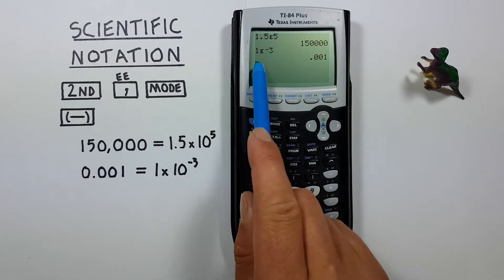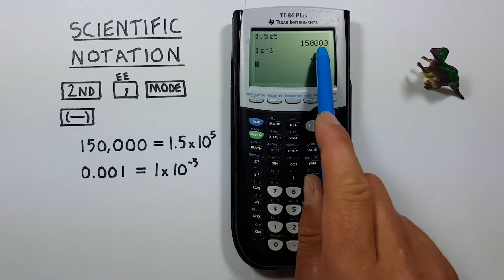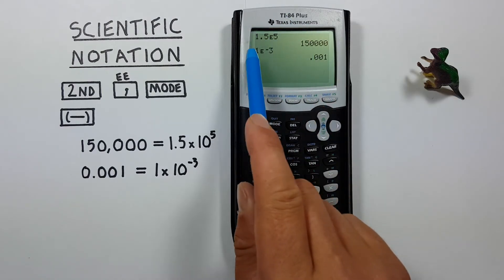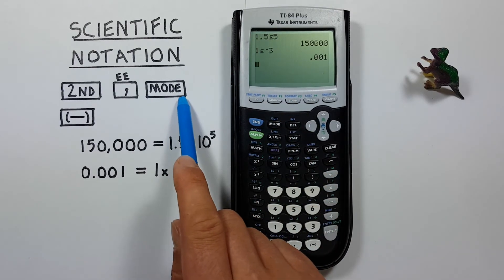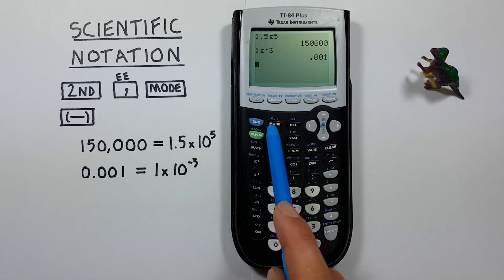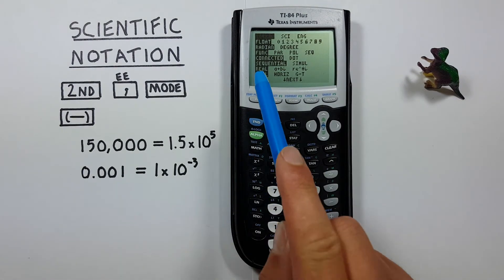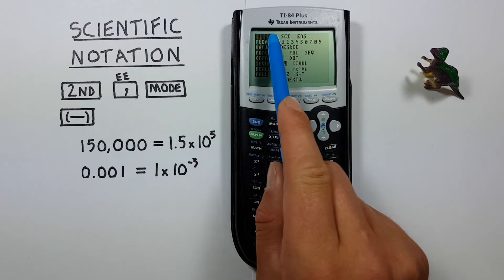Now this is good for entering numbers on an individual basis. But if we are given a number like say this in normal notation and want to convert that into scientific notation, well to do that we need to change our calculator to scientific notation mode. So to do that we press the mode key. And at the very top here we'll see three options: Normal, Sci, and Eng.